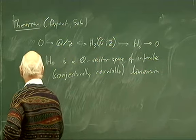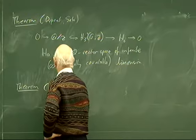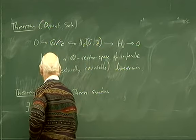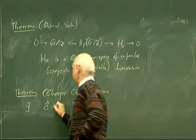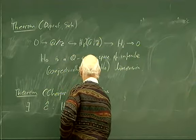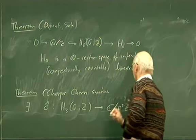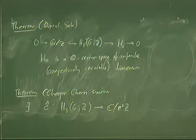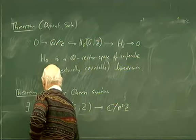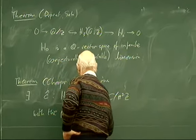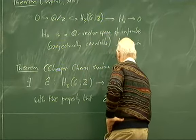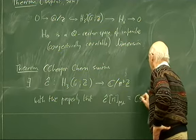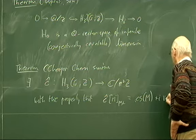Once one knows this group is simply a ℚ-vector space plus ℚ/ℤ — where ℚ/ℤ you can think of as the union of all finite cyclic groups of increasing size — there's a theorem of Cheeger–Chern–Simons. It states: there exists a map Ĉ from H₃(G; ℤ) to ℂ modulo π²ℤ — complex numbers modulo multiples of π².